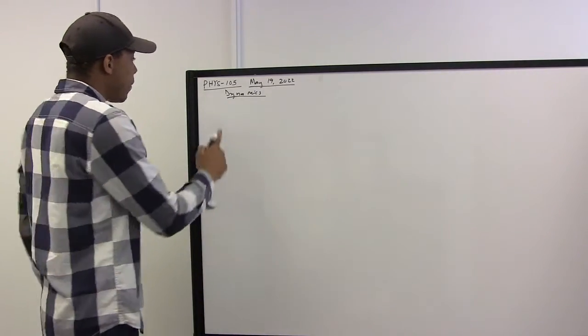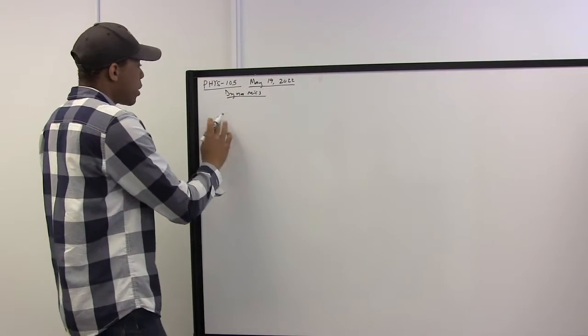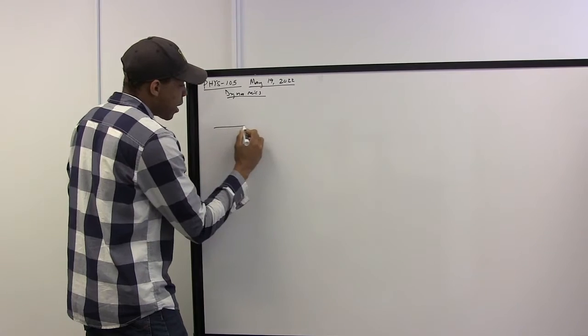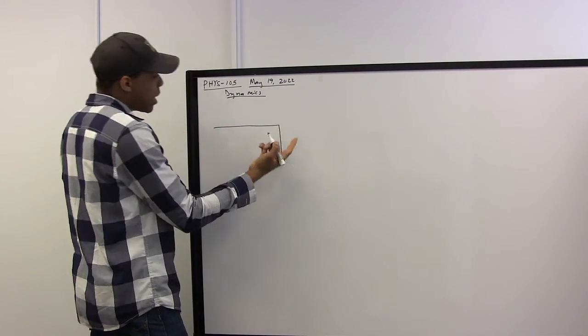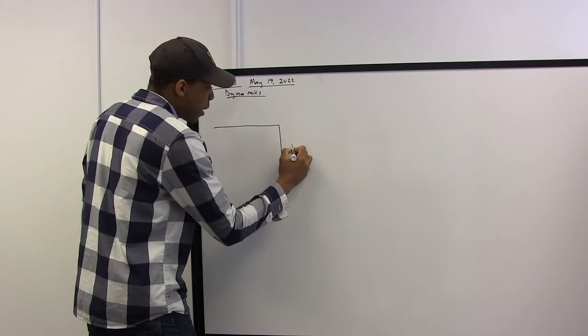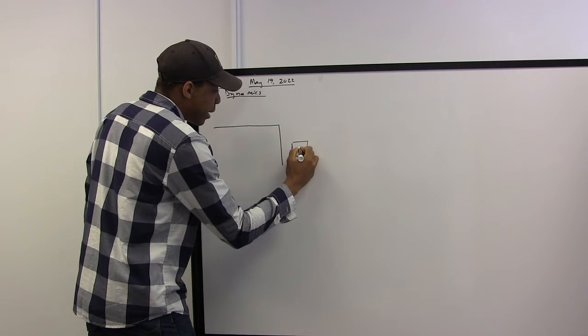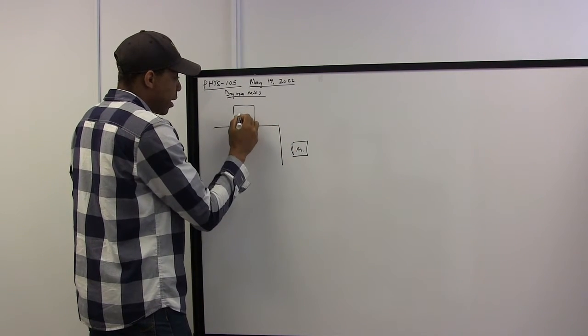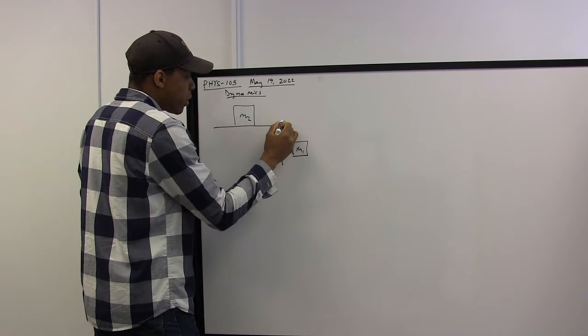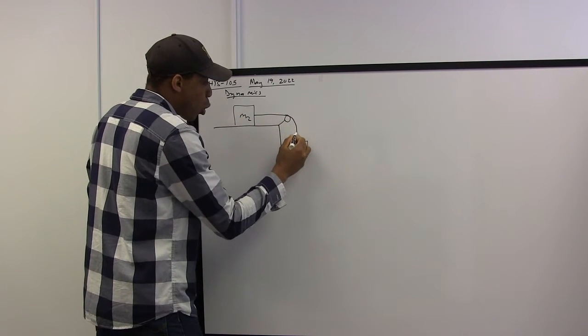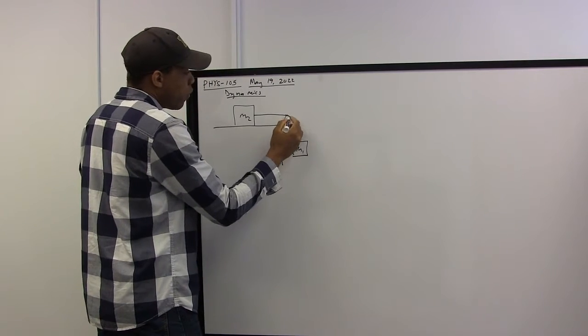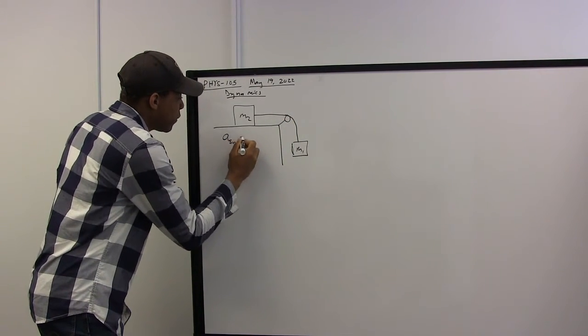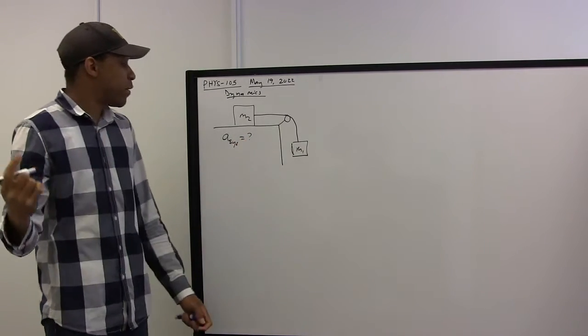Today we will be applying those concepts towards the calculation of the acceleration of a system and the problem in focus today is sketched out as follows. So consider this as a table or some surface and we have some mass m1 and another mass m2, and m1 is connected to m2 by a cord over a pulley. The task today is to calculate the acceleration of the system using the concepts I've mentioned already.